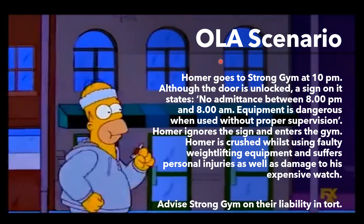When you've looked at the facts, it's obvious that this would involve the 1984 Act because it's making clear that Homer is trespassing — although the door is unlocked, there's a sign that clearly states he shouldn't be going in there at that time, and it tells you that he ignored the sign and entered the gym anyway. The clue is that Homer is injured and suffers damage to his property, so that tells you that you need to be looking at the Occupier's Liability Act.